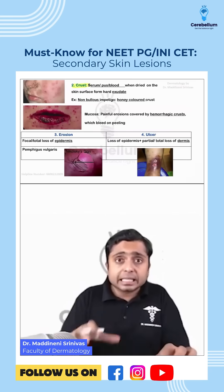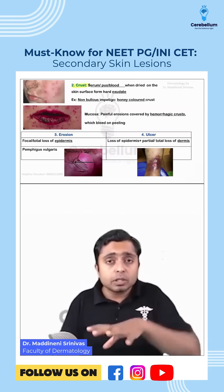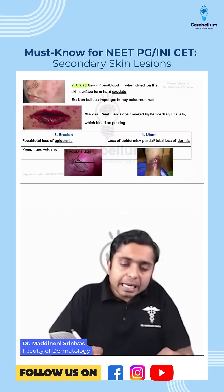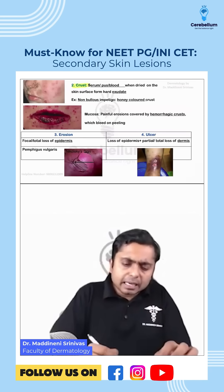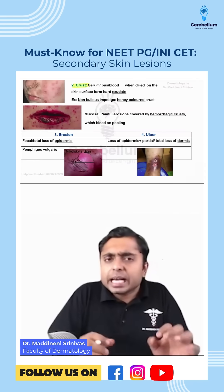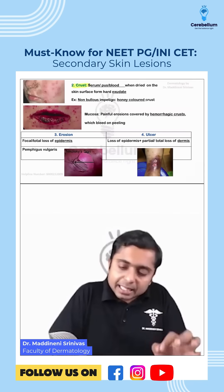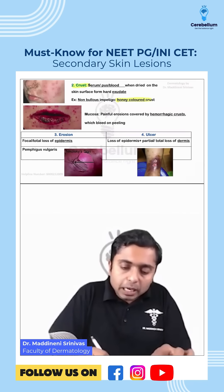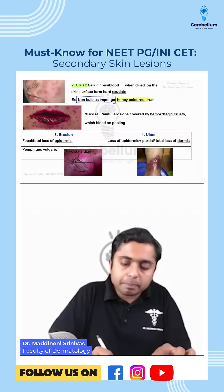These are all the secondary skin lesions which you are able to see in this particular slide. Crust — honey colored crust is very important. It is seen in non-bullous impetigo.